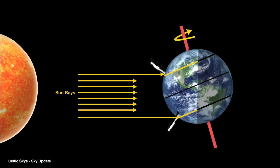Consider two people, one standing in the Northern Hemisphere and one in the Southern Hemisphere. As the Earth rotates about its axis, they both spend time in the light — daytime — and in the dark — nighttime.